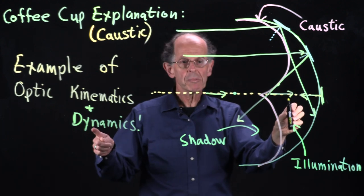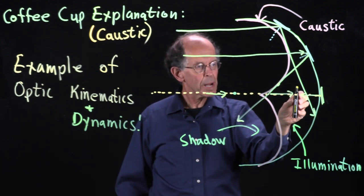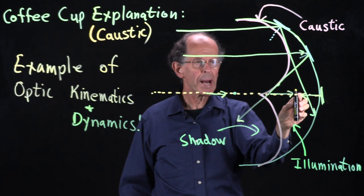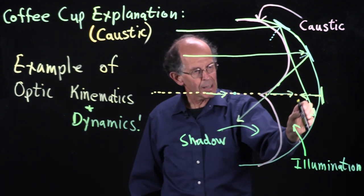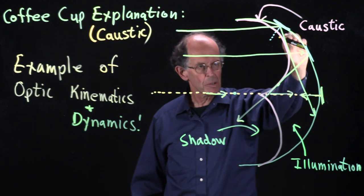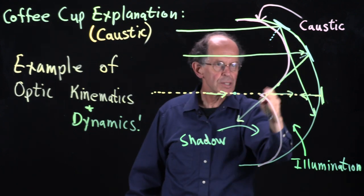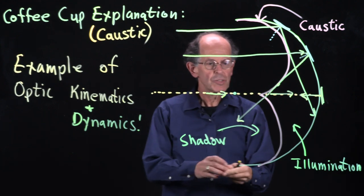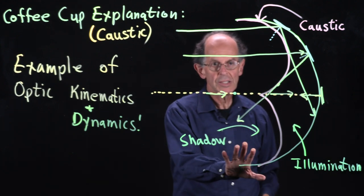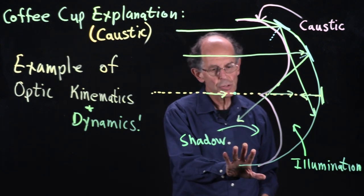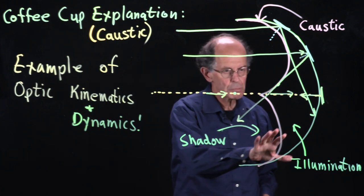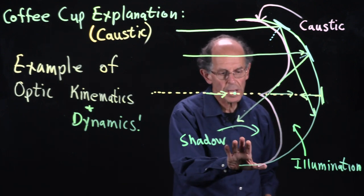Now, a little bit about dynamics. To the right of the caustic, if you go back and look at the video, it's all filled in with light. This is the illuminated region to the right of the caustic. To the left of the caustic, it's dark - that's shadow. So we have a transition between illumination and shadow.